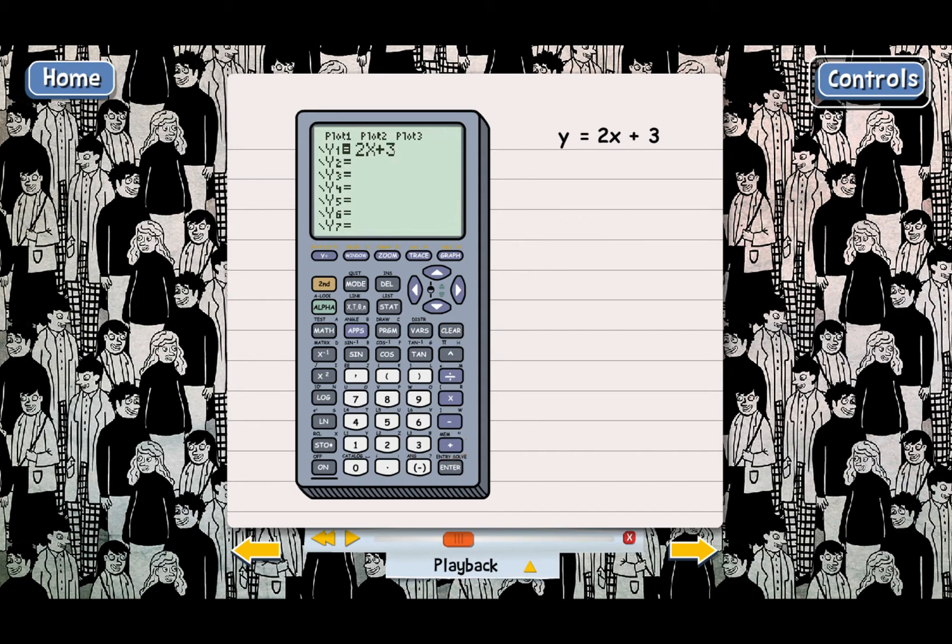Good. Now that we've got the entire equation in, the next step is to press the graph key, which is right here. Go ahead and click on that. Good. And look what we get. This is the graph for y = 2x + 3.